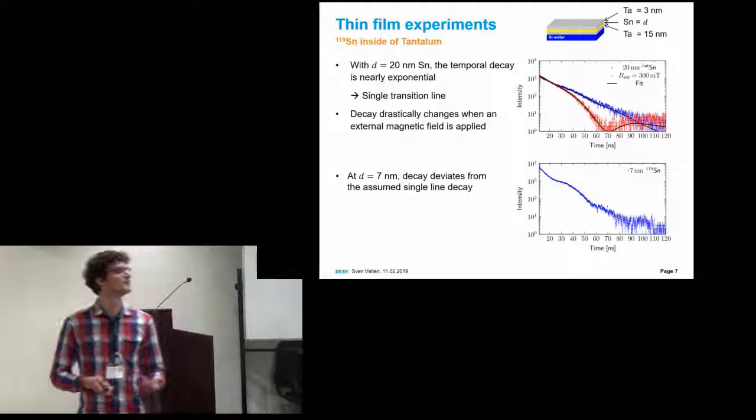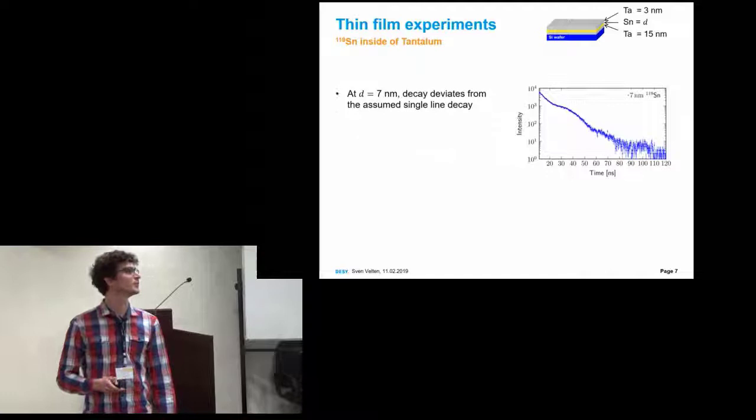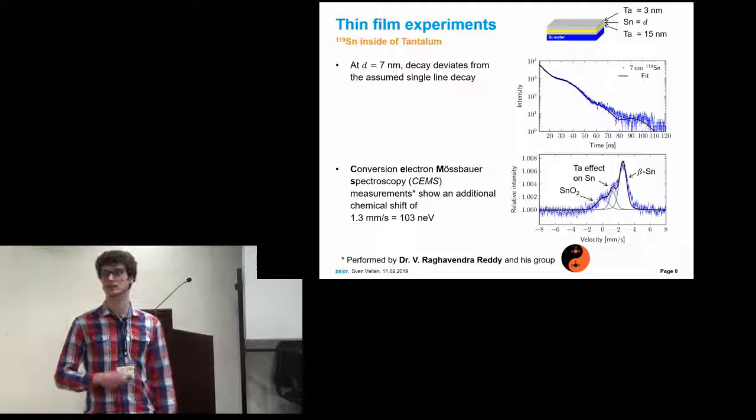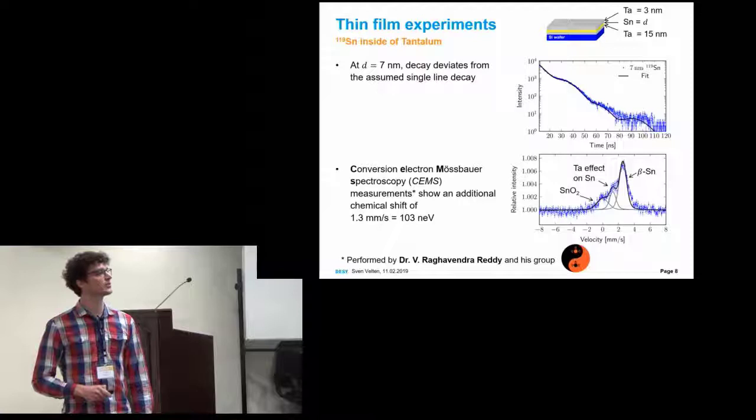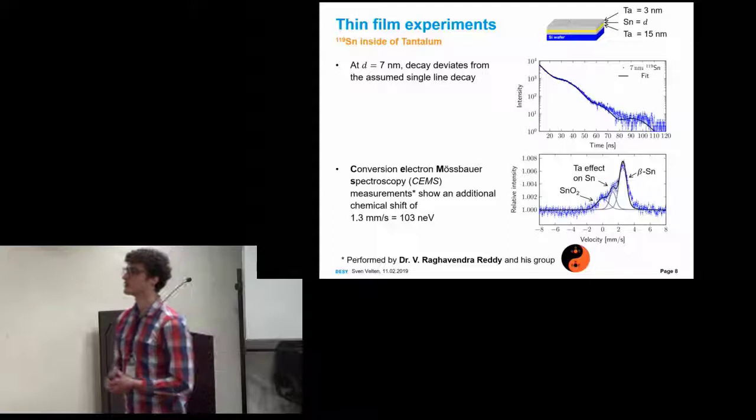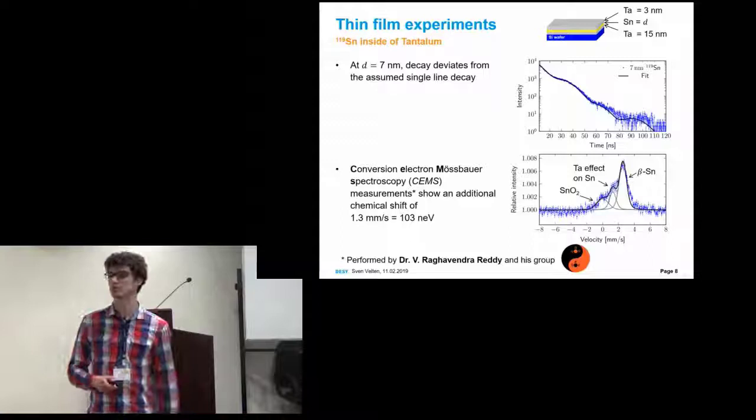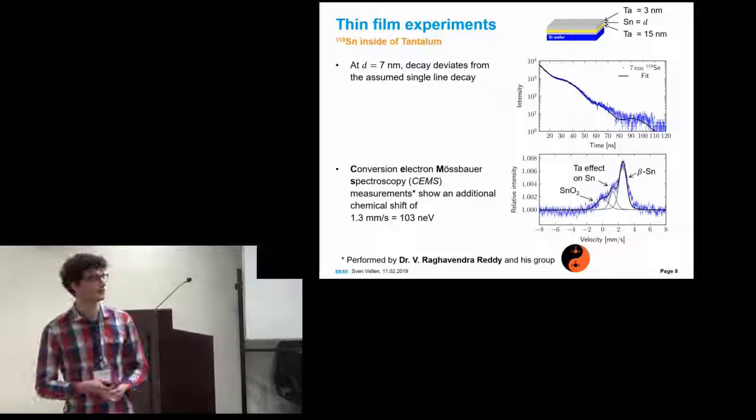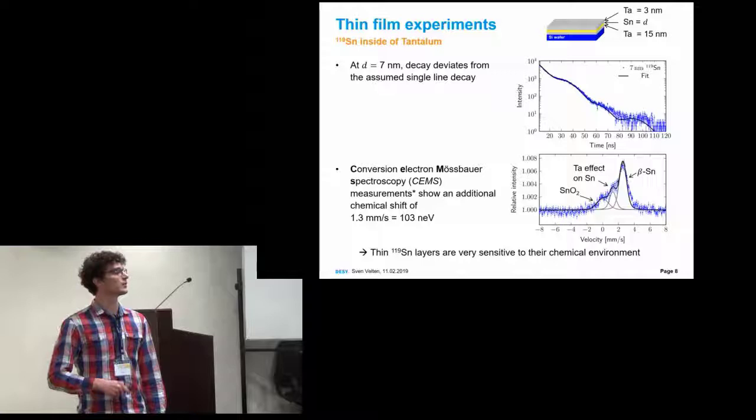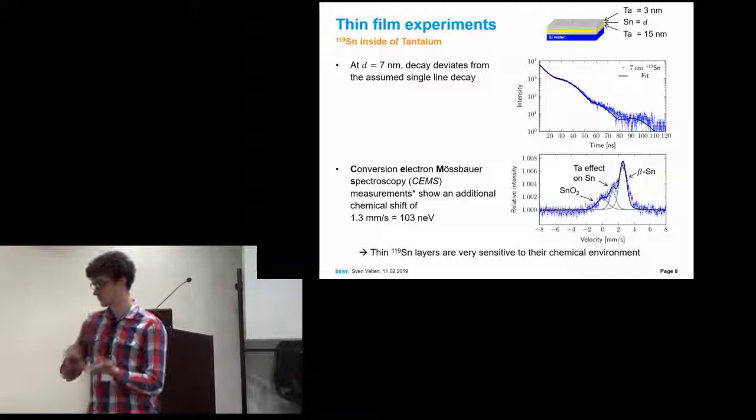We conducted conversion electron Mössbauer spectroscopy measurements, which were performed by Raghavendra Reddy and his group at the UGC-DAE in Indore. The corresponding spectrum shows that we have beta-tin and some tin oxide. But we have also an additional chemical shift, which is something from the tantalum. This is quite surprising because even though we are at 7 nanometers, this still means that we have about 20 atomic layers. Interface effects shouldn't play a role anymore. This really points out how sensitive these 119 tin layers are to their chemical environment.